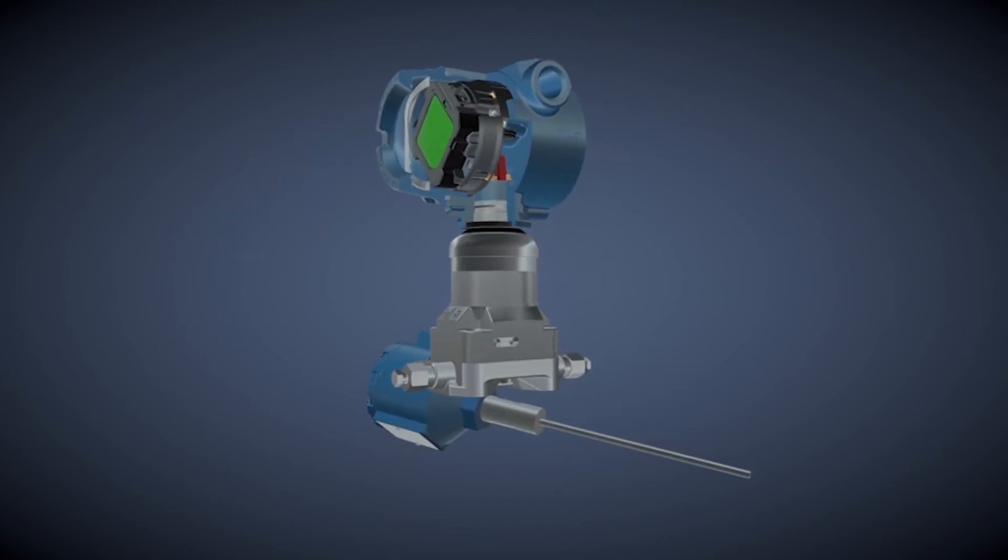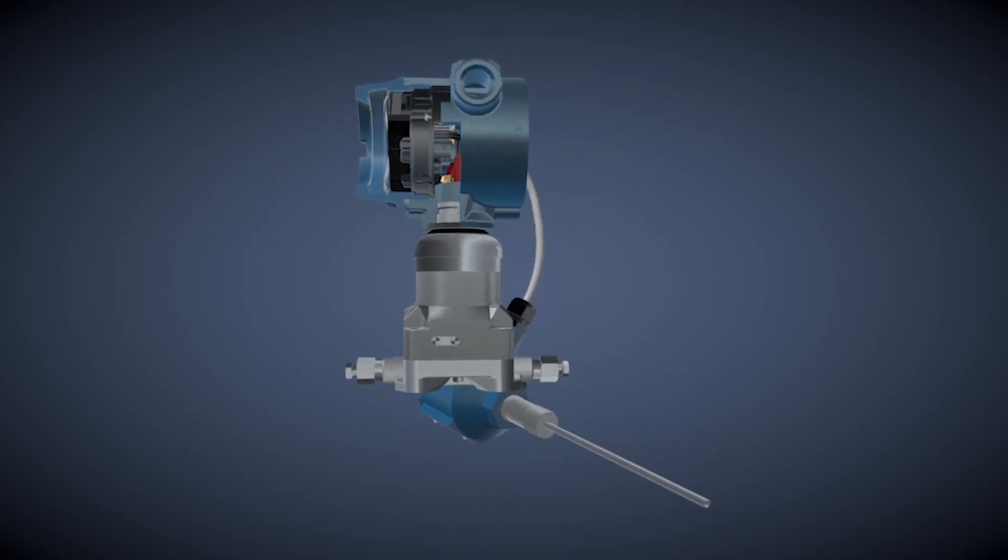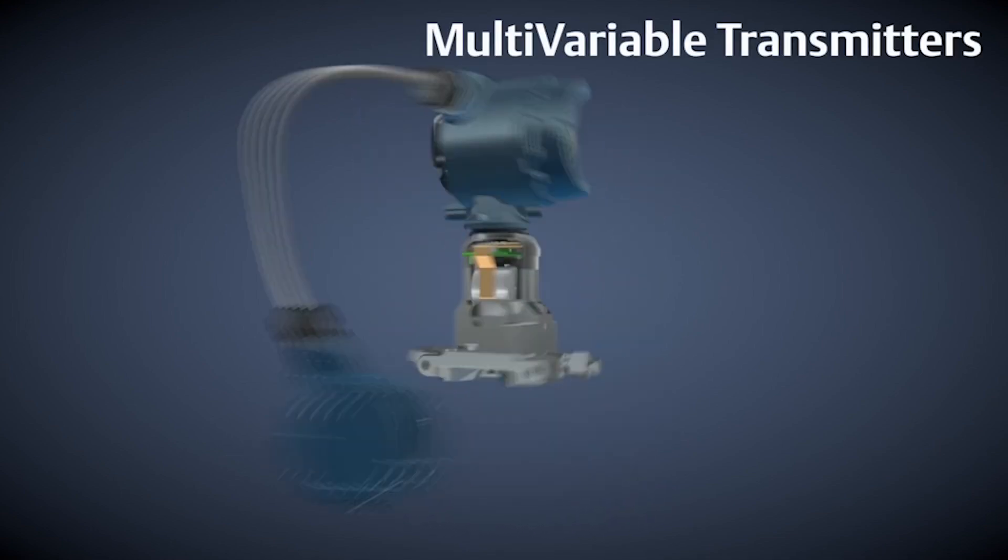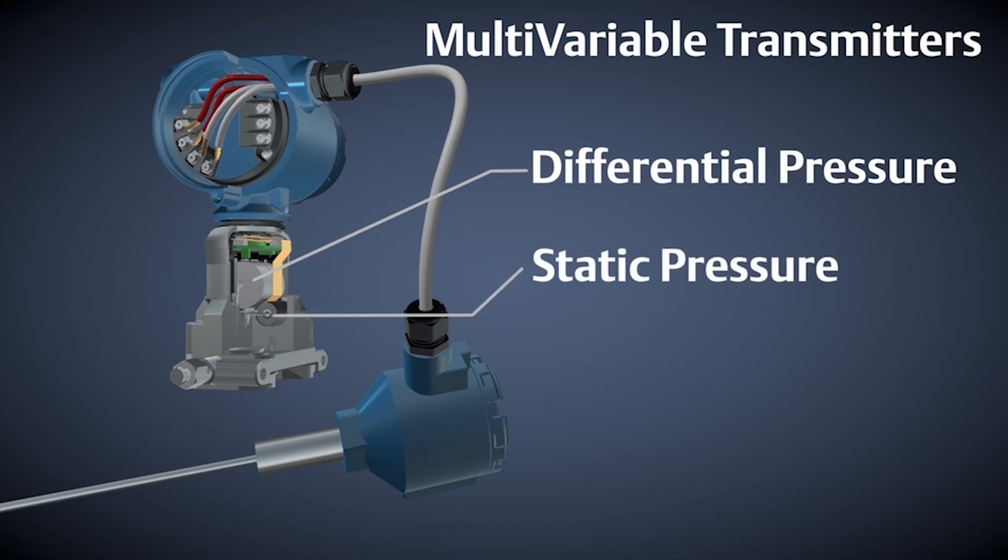There have also been major flow transmitter advancements with the arrival of multivariable technology. Multivariable transmitters measure differential pressure, static pressure, and process temperature, resulting in a highly accurate mass or energy flow measurement.